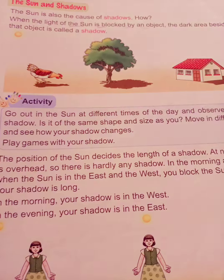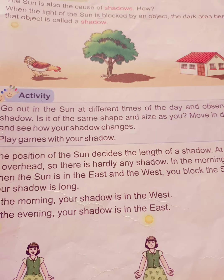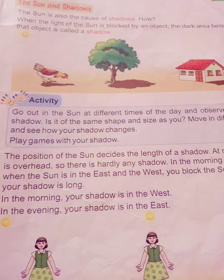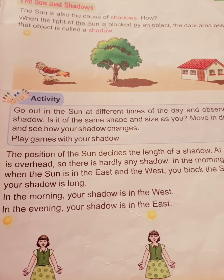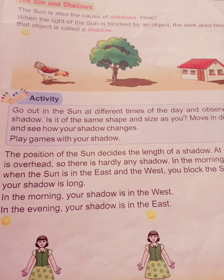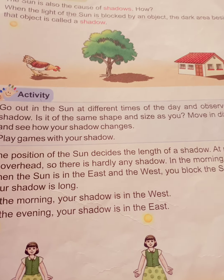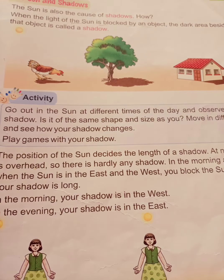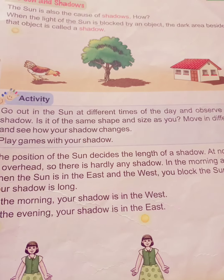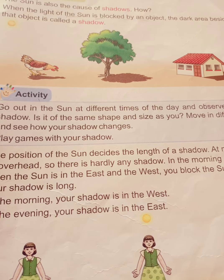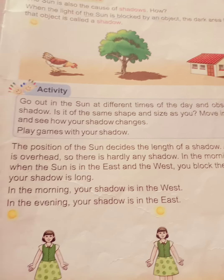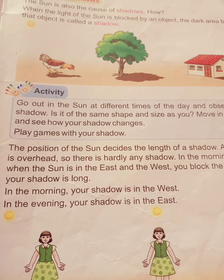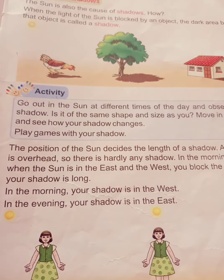Do an activity, children. Go outside in the sun at different times of the day — morning, afternoon, and evening at sunset. Go out and move in different ways and observe how your shadow will be different at different times.